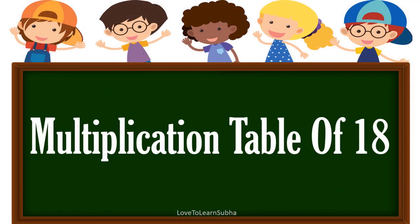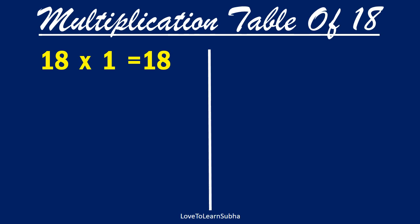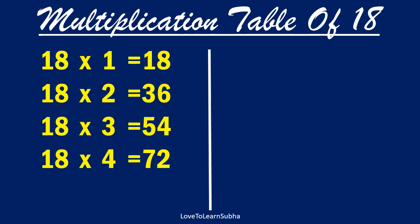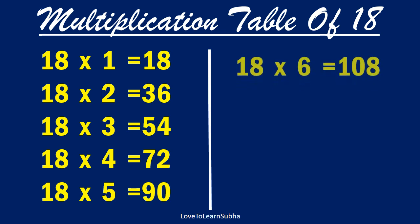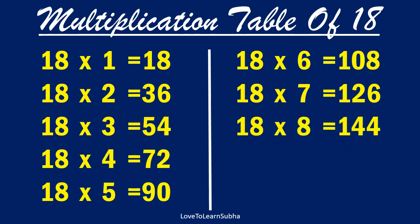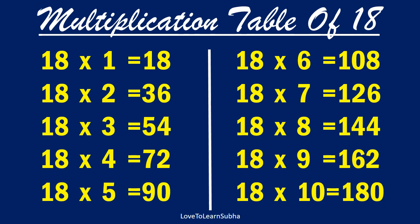Multiplication table of 18. 18×1 is 18, 18×2 is 36, 18×3 is 54, 18×4 is 72, 18×5 is 90, 18×6 is 108, 18×7 is 126, 18×8 is 144, 18×9 is 162, 18×10 is 180.